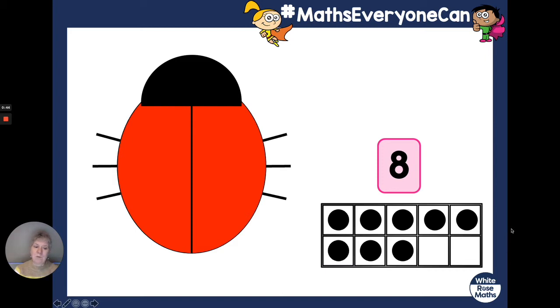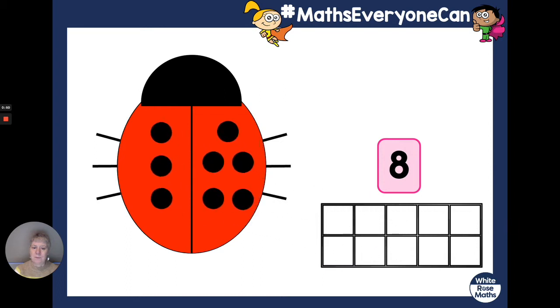Now the eight counters are going to go onto the ladybird. Are you ready? There they go. Can you put counters on your ladybird? How many are there here? Can you count them first? One, two, three. Three counters on one side.